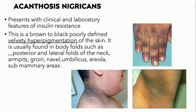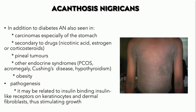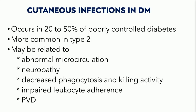Acanthosis nigricans is a velvety hyperpigmentation we'll usually see in the folds, commonly the axillary folds. When we start to see it on the dorsal hands or widespread — emanating from the axillary regions but becoming more diffuse — be thinking of internal malignancy or diabetes. We'll also see it in other endocrinopathies like acromegaly, Cushing's disease, and sometimes hypothyroidism. When it becomes widespread, maintain a high index of suspicion for underlying malignancy.